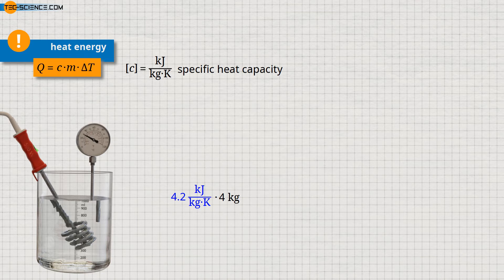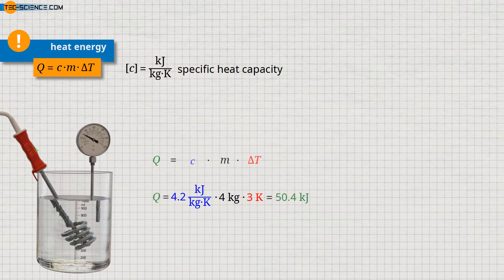If, in addition, the temperature is to be heated not only by 1 kelvin but by 3 kelvin or 3 degrees Celsius, then 3 times the heat is required. Thus, by multiplying the mass and the temperature change with the specific heat capacity, the total heat required is obtained. This example shows the structure of the formula Q = c · m · ΔT once again.